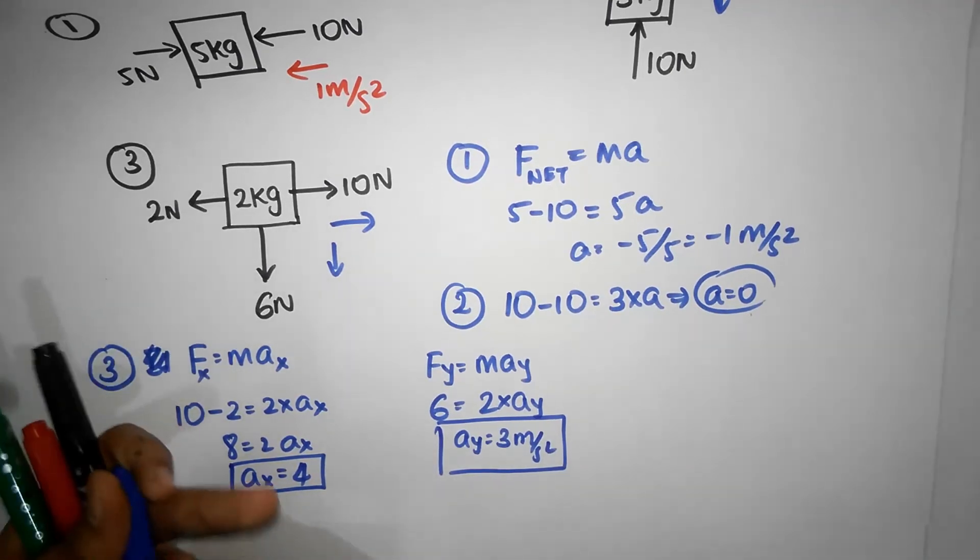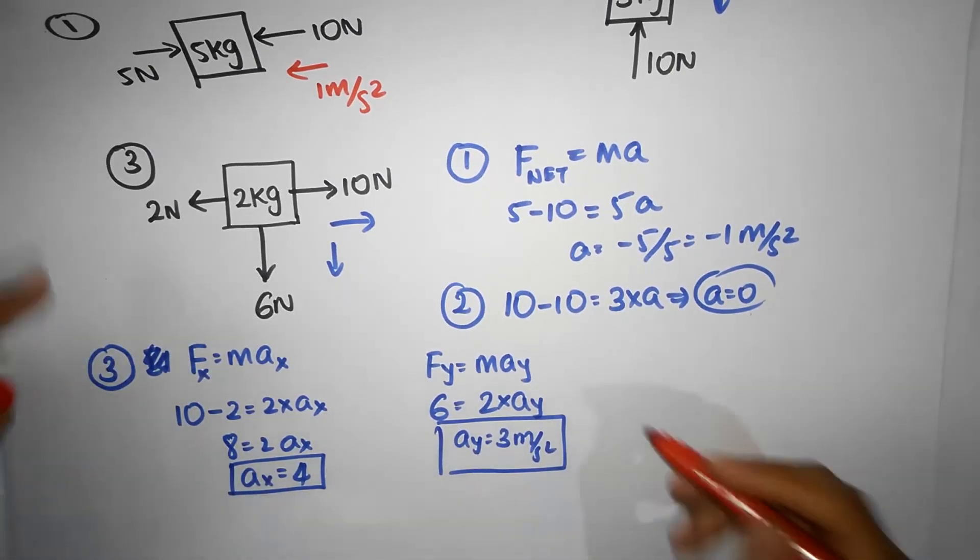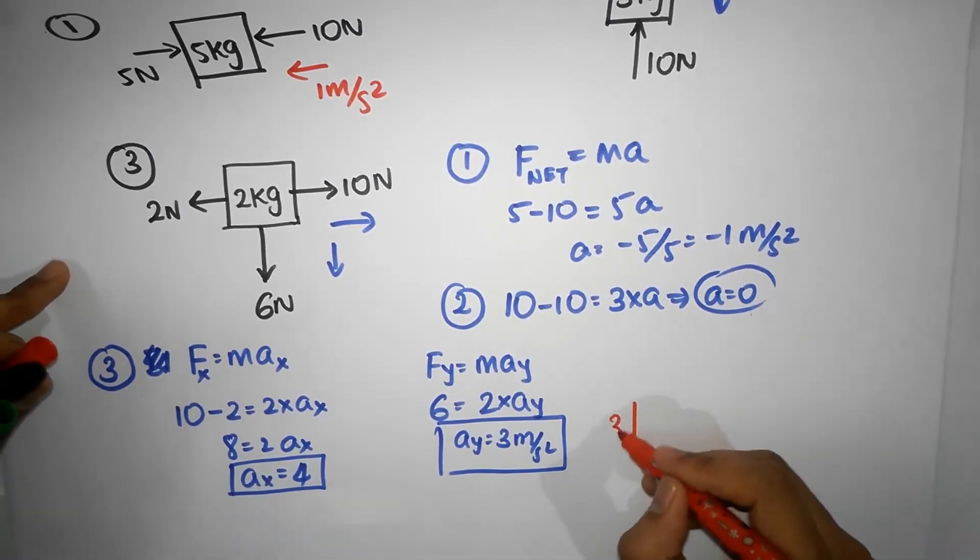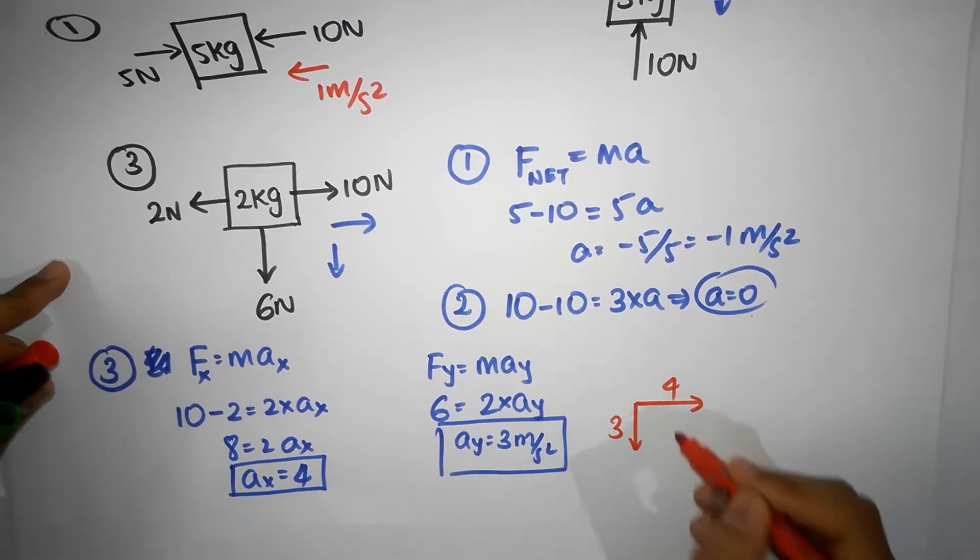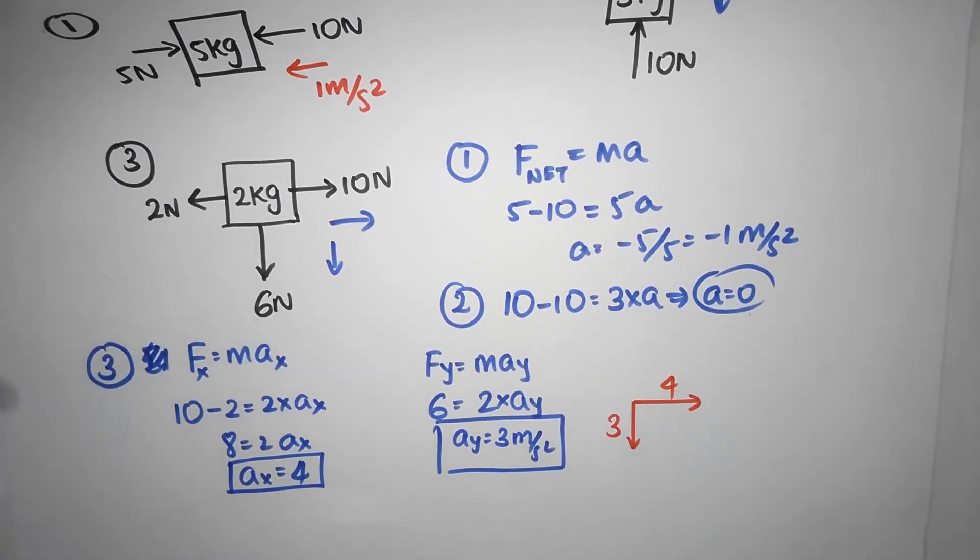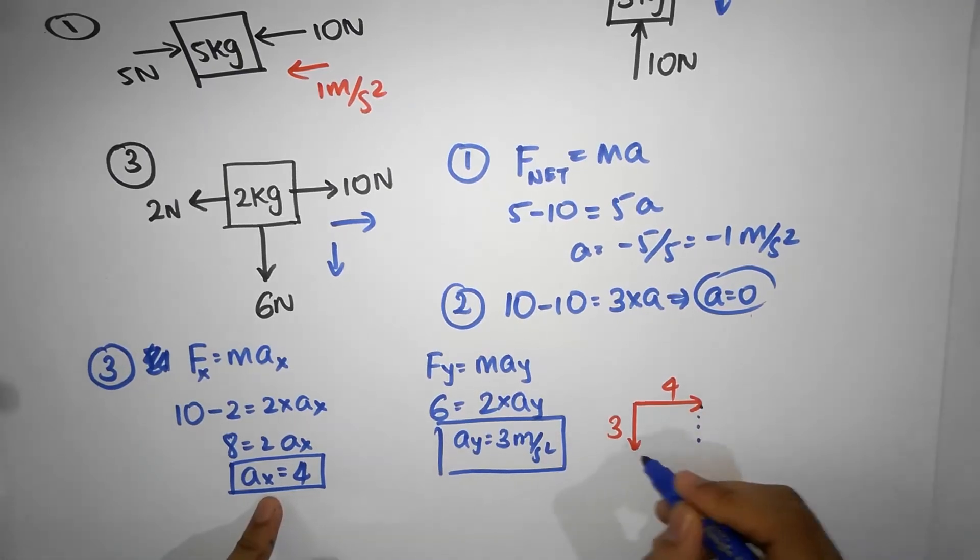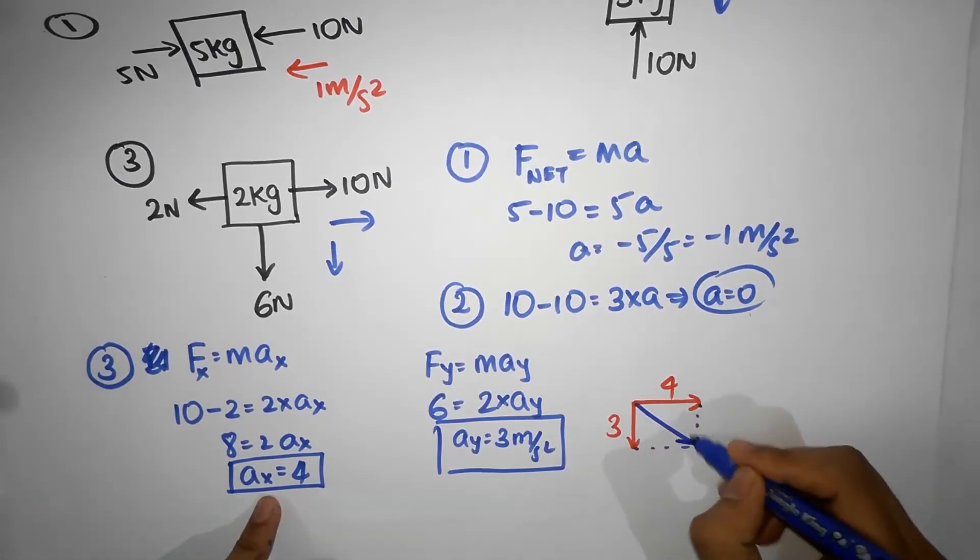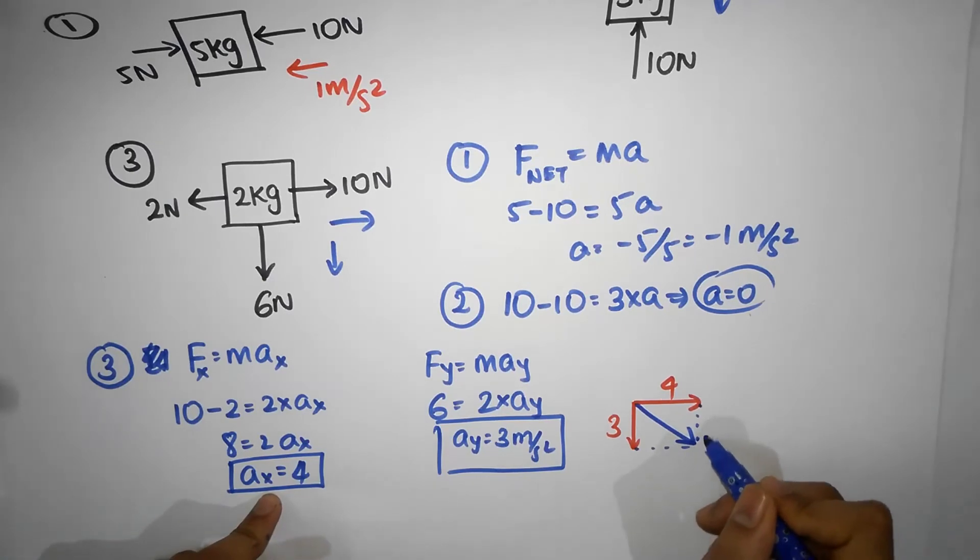So, we now have the acceleration which has one component downwards of 3, one component towards the right at 4. So, the net acceleration is going to, the actual acceleration, these are just the components, the acceleration is going to be this way.